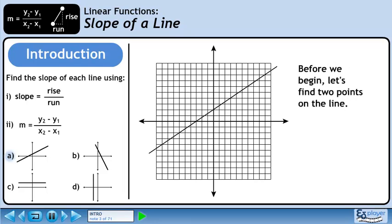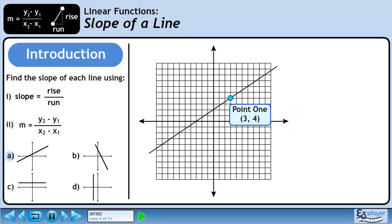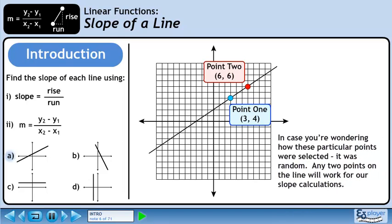Before we begin, let's find two points on the line. We'll use the first ordered pair as our first point, and the second ordered pair as our second point. Any two points on the line will work for our slope calculations.